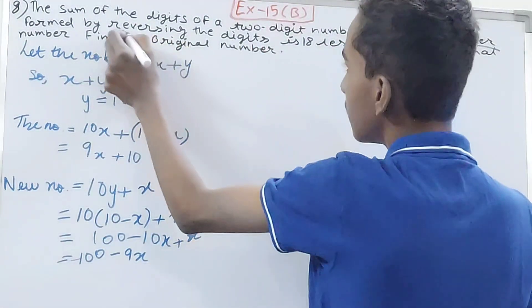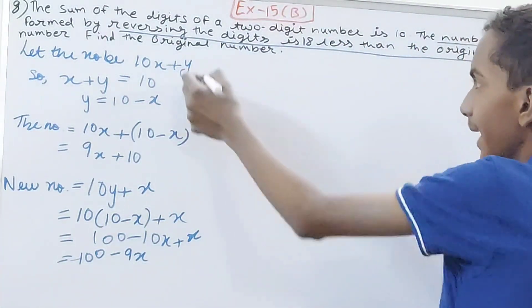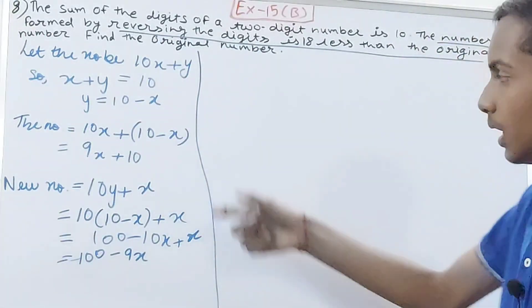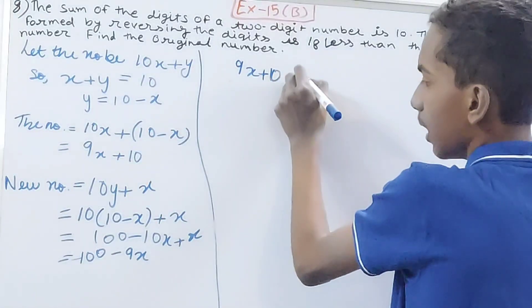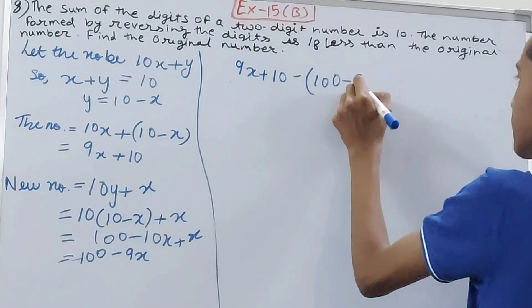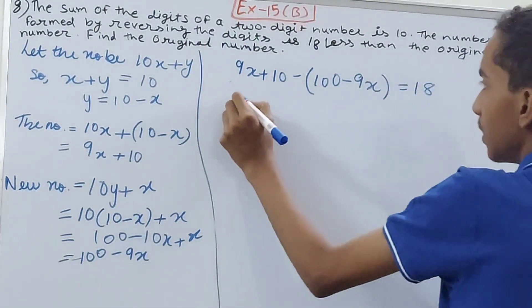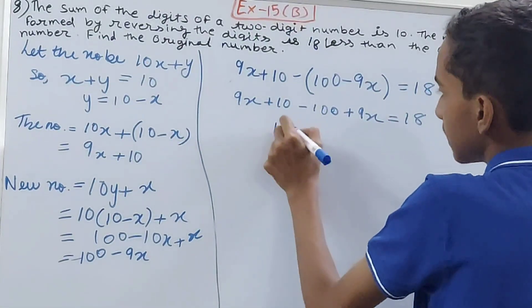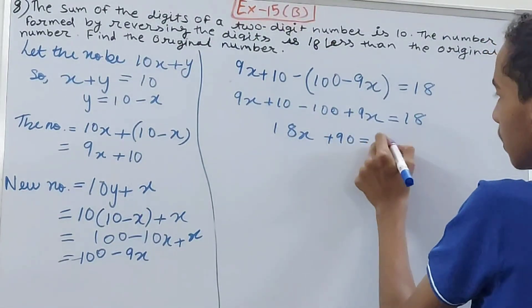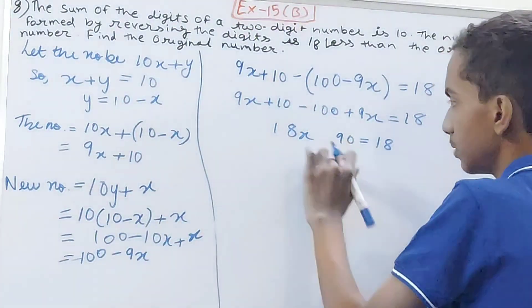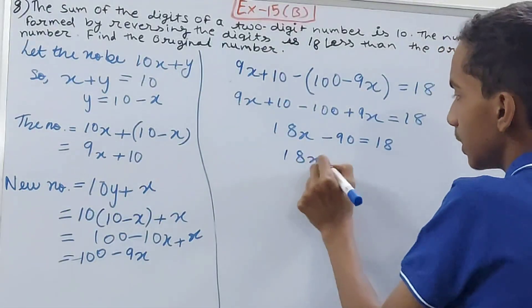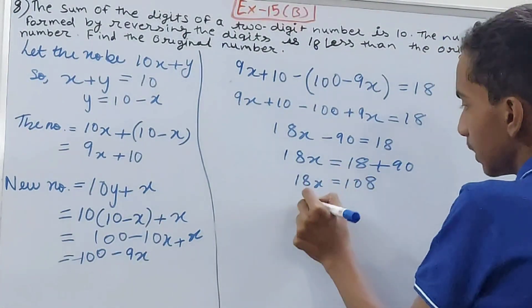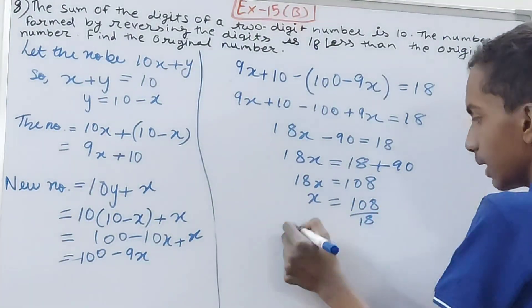The problem says the reversed number is 18 less than the original number, so: (9x + 10) − (100 − 9x) = 18. Expanding: 9x + 10 − 100 + 9x = 18, which gives 18x − 90 = 18, so 18x = 108, and therefore x = 6.